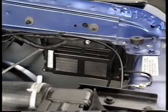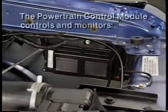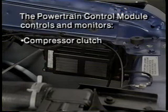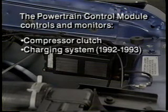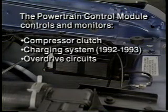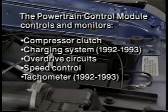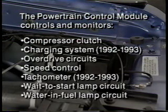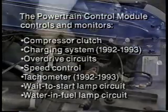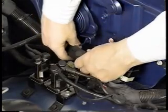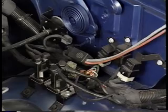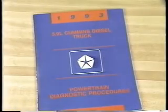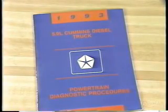In most cases, malfunctions in these areas will be obvious. We're talking about the compressor clutch, charging system, and overdrive circuits, as well as the speed control, tachometer, and wait to start and water in fuel lamp circuits. In these cases, you'll need to connect the scan tool to the data link connector and use the powertrain diagnostic procedures manual to track down the cause.